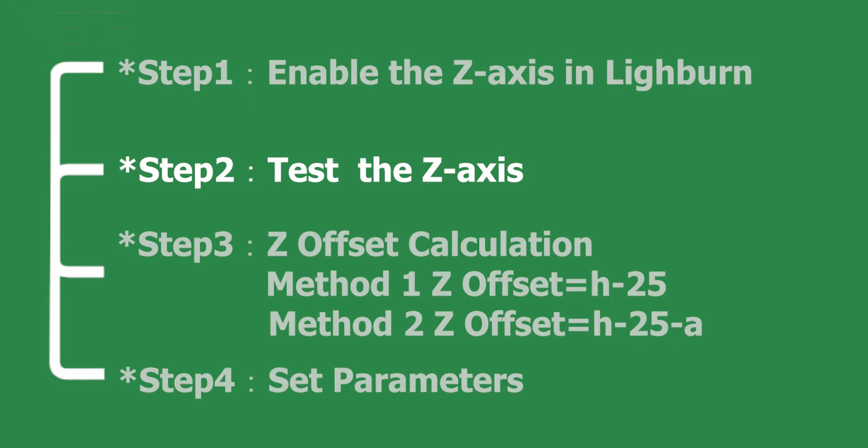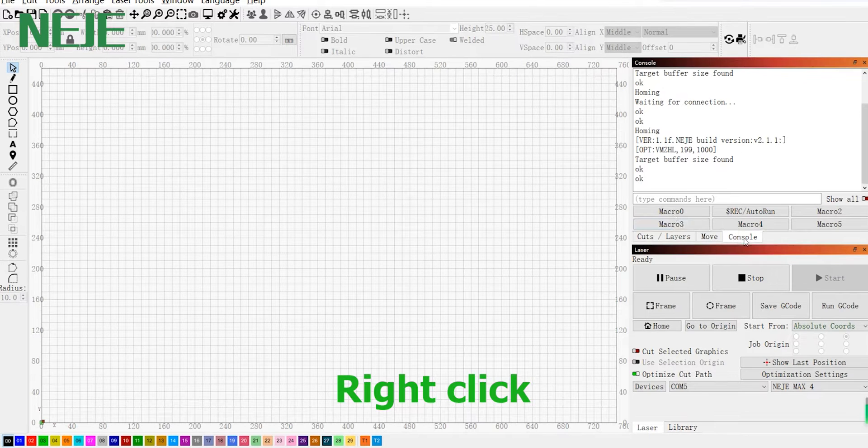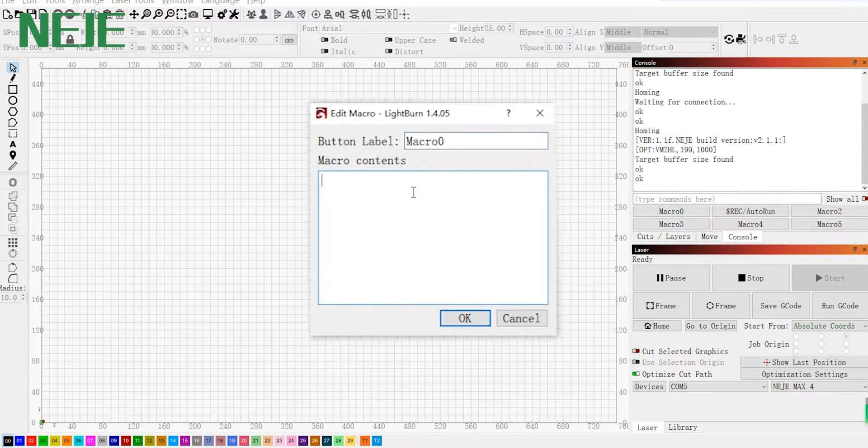Step 2: Test Z-axis. We will give you two codes to test the Z-axis. Right-click macro in console, and then input $H space Z.